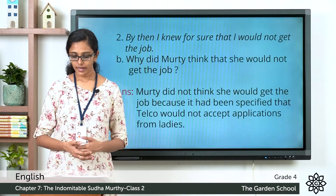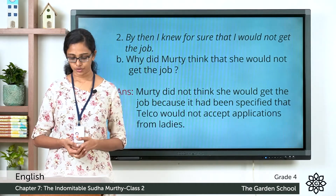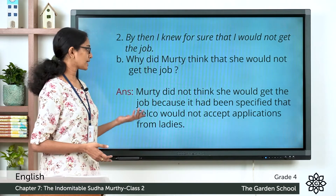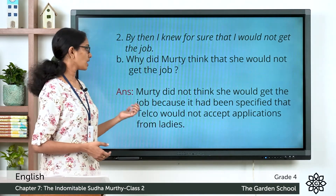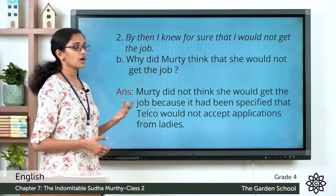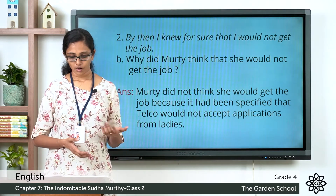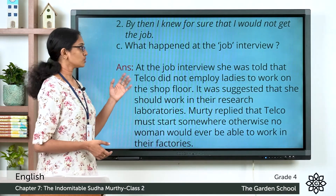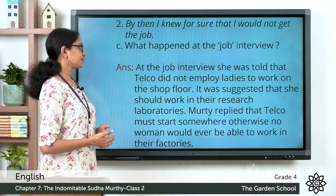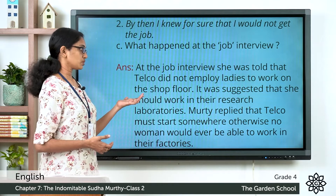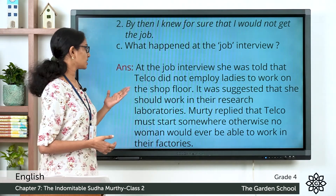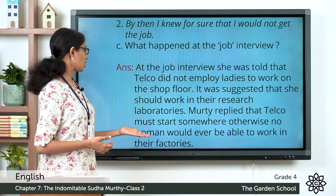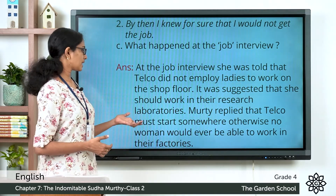Question B: Why did Murthy think that she would not get the job? Murthy thought she would not get the job because it had been specified that Telco would not accept applications from ladies. Question C: What happened at the job interview? At the job interview she was told that Telco did not employ ladies to work on the shop floor. It was suggested that she should work in their research laboratories. Murthy replied that Telco must start somewhere, otherwise no woman would ever be able to work in their factories.